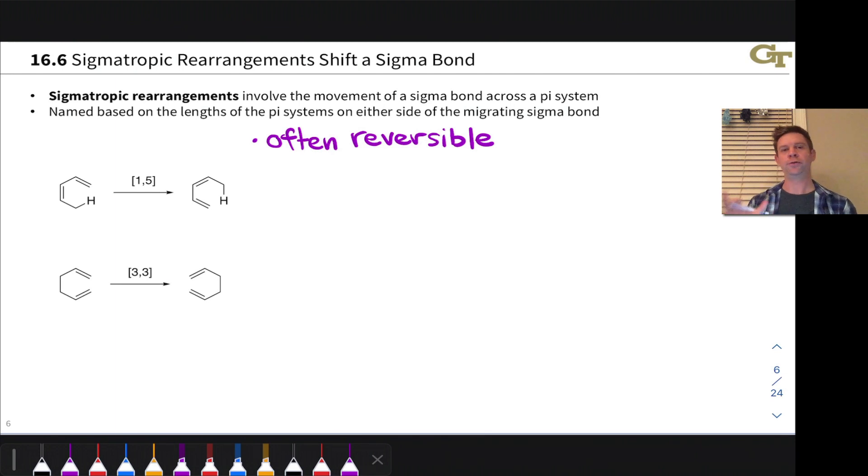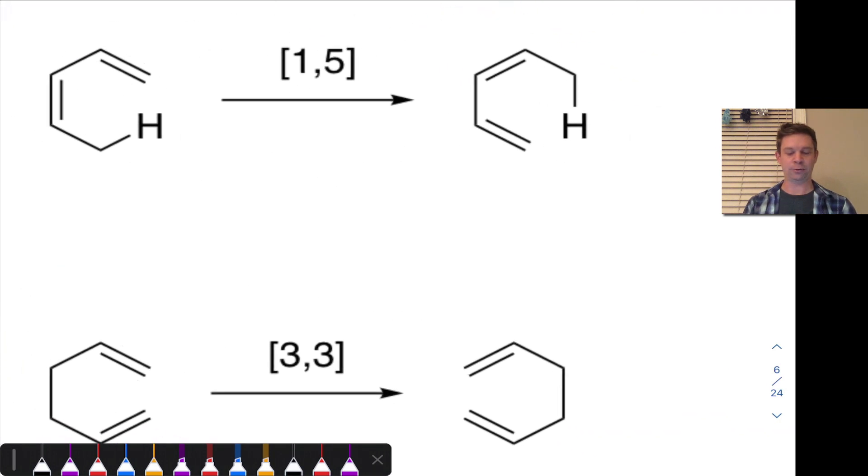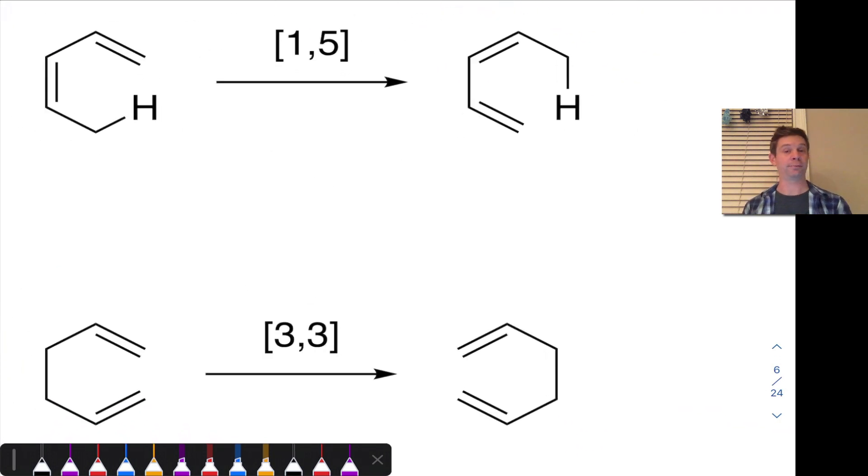The nomenclature here can get a little bit confusing, and so I wanted to work through two examples of sigmatropic rearrangements to explain how the nomenclature comes about. First here, we have a 1,5 rearrangement at the top of the slide. And this is called, well, first, let's look at the electron flow.